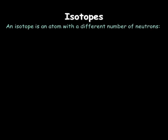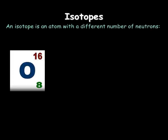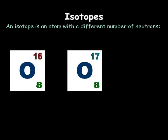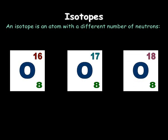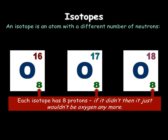Some atoms can exist in different forms. For example, here we have oxygen. We have three different isotopes — isotopes mean different types of the same element.